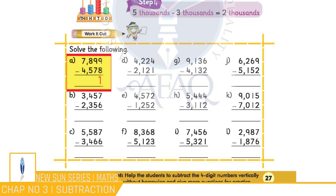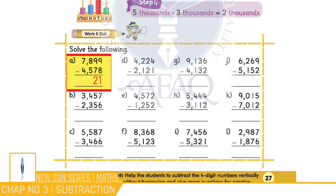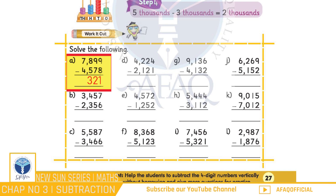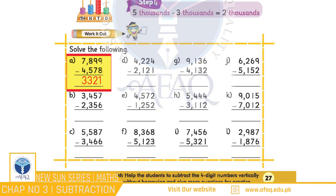Jiske liye hum 1s place pe maujood values subtract karenge, yani 9 minus 8 jiska jawab hoga 1. Aur iske baad 10s place pe maujood values subtract ki jayengi, yani 9 minus 7 jiska jawab hoga 2. Aur iske baad 100s place pe yani 8 minus 5 jiska jawab hoga 3. Aur aakhir mein 1000s place se 7 minus 4 jiska jawab hoga 3. Is tarike se hamara mukammal jawab banta hai: 3,321.